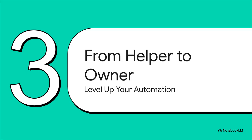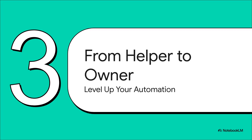This is where the journey gets really fun. Once you've used scripts to find the apps you genuinely love, the next step is to level up — to move from being a user of somebody else's magic to becoming the owner of your own automation. You hear these names — Ansible, Packer, Terraform — thrown around all the time, and they can sound super intimidating. But their jobs are actually dead simple. Ansible's whole job is to say, hey server, I need you to look exactly like this. Packer's job is to bake a perfect, reusable template image. Cloud-init is what customizes that template the very first time it boots up. And Terraform lets you describe your entire setup — all your VMs and networks — just as code.